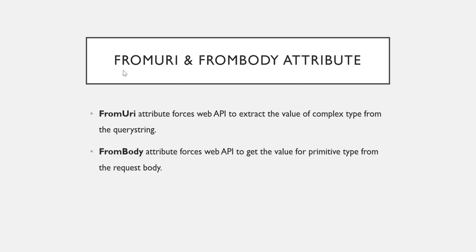The two options are the attributes [FromUri] and [FromBody]. [FromUri] forces extraction of complex type values from the query string, whereas [FromBody] forces primitive type values to be read from the request body. So it's the exact opposite of the default behavior: by default, complex data comes from the body and primitive data from the URI, but you can reverse this using these attributes.